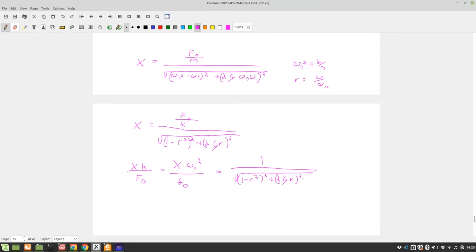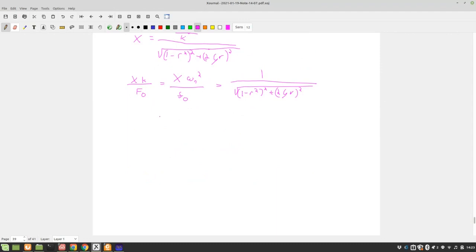Which is equal to 1 over the square root of (1 - r²)² + (2ζr)² in a similar fashion. So if we manipulate the equation for φ_p, we can get that φ_p = tan⁻¹(2ζr / (1 - r²)).